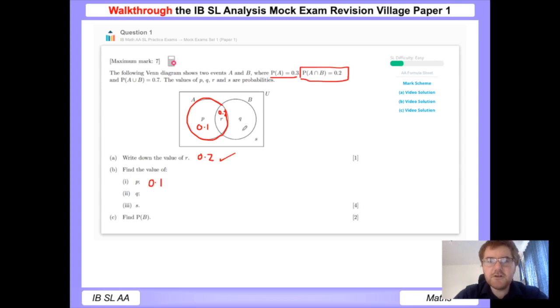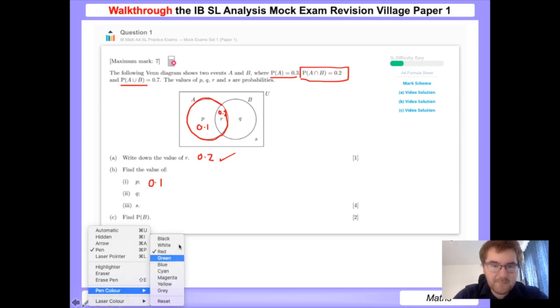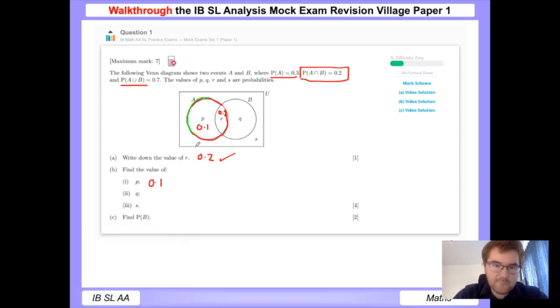Now to work out q, we're told the union is equal to 0.7, which means if I use a slightly different color here, this entire set here is equal to 0.7. So we need to think: 0.1 plus 0.2 plus something gives us 0.7, and a little calculation here will give us 0.4. You can check backwards: 0.4 plus 0.2 plus 0.1, well that's equal to 0.7.